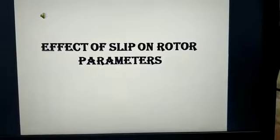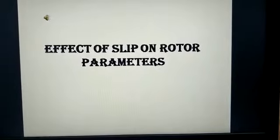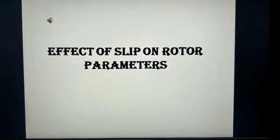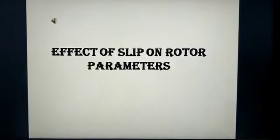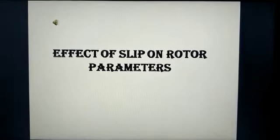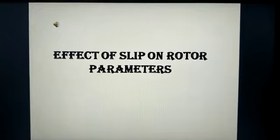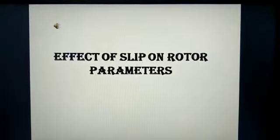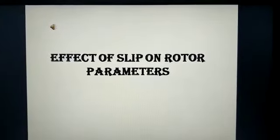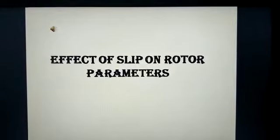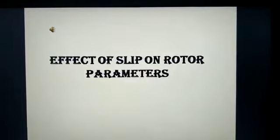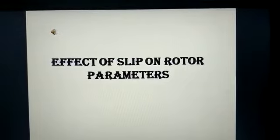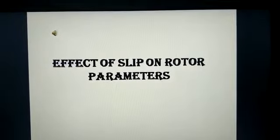On rotor parameters, we know that we can refer the induction motor to a transformer. The induction motor is also known as a rotating transformer. In a transformer, we have two windings namely primary and secondary. The primary winding of the transformer is referred to the stator of the induction motor and the secondary winding of the transformer is referred to the rotor. In the case of a transformer, the frequency of the induced EMF in the secondary is same as the voltage applied to the primary.